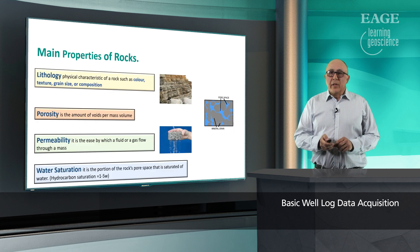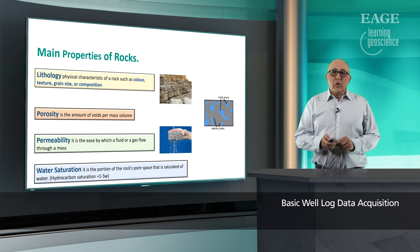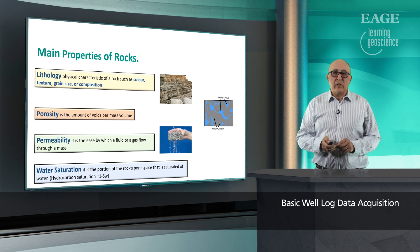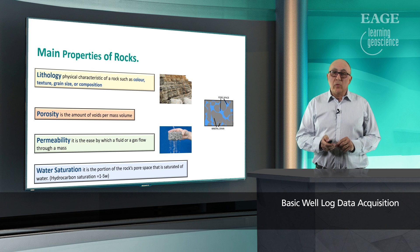So what are the rock properties I'm talking about? I'm talking about lithology, porosity, permeability, and water saturation. Lithology is a physical characteristic of a rock such as color, texture, grain size, and composition. Porosity is the amount of voids or holes in the rock.